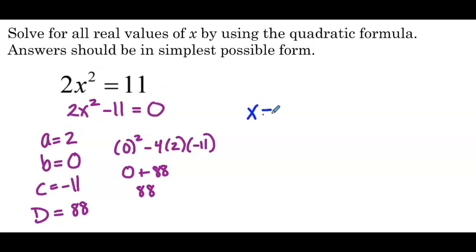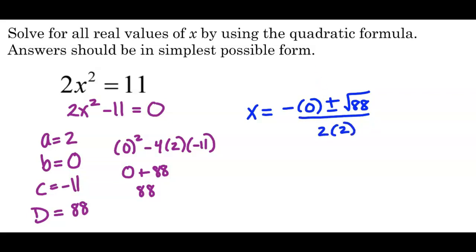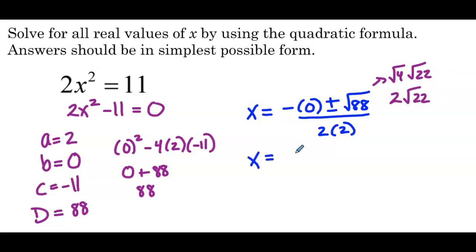So now in the quadratic formula, we have the negation of b, which is 0, plus or minus the square root of 88, all over 2a, so 2 times 2. The square root of 88 can be simplified to the square root of 4 times the square root of 22, which is 2 times the square root of 22 — since 22 factors into 11 and 2, neither of which are perfect squares, that's the best we can do.